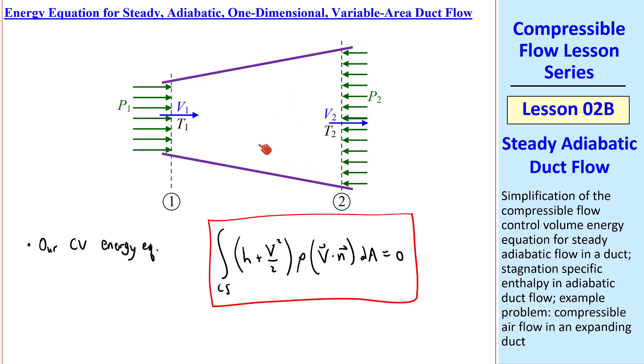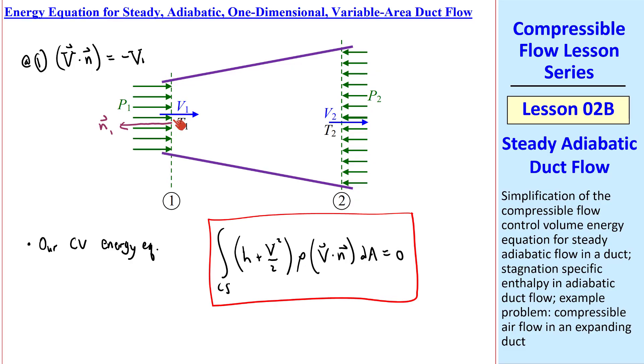For our 1D expanding duct here, at the inlet 1, v dot n becomes negative v1, since the unit normal outward vector n1 is opposite of the direction of v1. Similarly, at the outlet, v dot n is positive v2, since the unit outward normal n2 is in the same direction as v2.